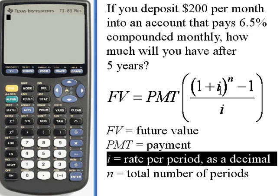i is the rate per period as a decimal. We want to take the rate per year, that's 6.5%, turn it into a decimal, 0.065, and then divide it by the number of periods. There's 12 compounding periods every year, so it's going to be 0.065 divided by 12.